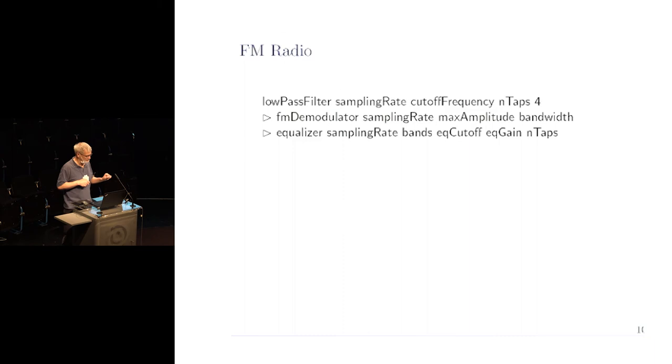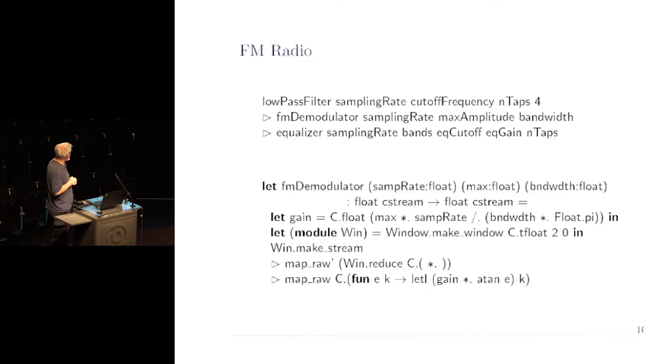Here is the demodulator, how it's implemented. There is a computing again, and this is window.makewindow. What it does, it takes the stream of floats and creates a stream of windows, of buffers. In this case, it creates a stream of buffers. Then you perform mapping on the stream of buffers. We map with a function reduce. It just multiplies them all together. That becomes, again, float. For the float, we perform arctangent, and then multiply again, and then let bind it.